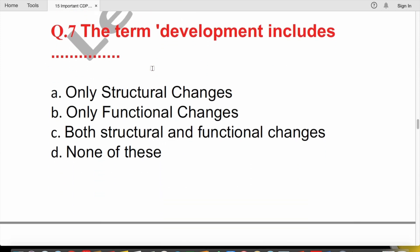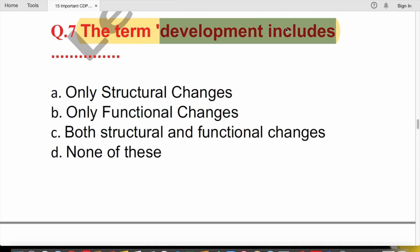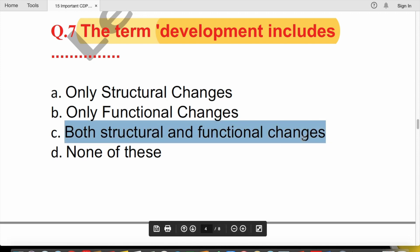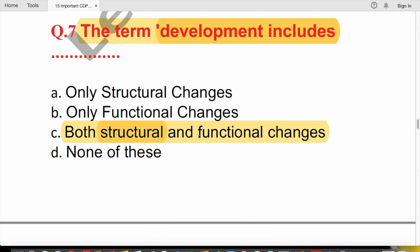Question 7: The term 'development' includes what kinds of changes? The answer is both structural and functional changes. Structural changes relate to the physical body and structure, while functional changes relate to the mind and qualitative aspects. Development encompasses growth, maturity, and both qualitative and quantitative changes.